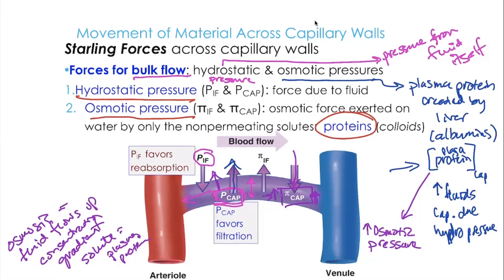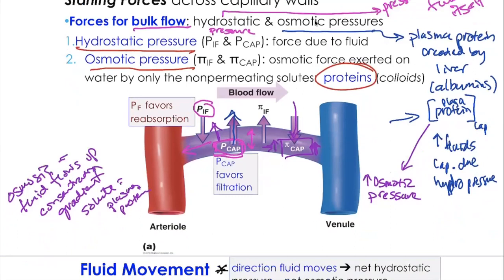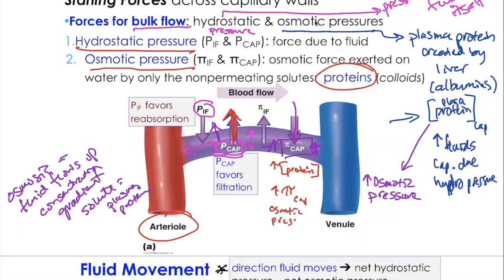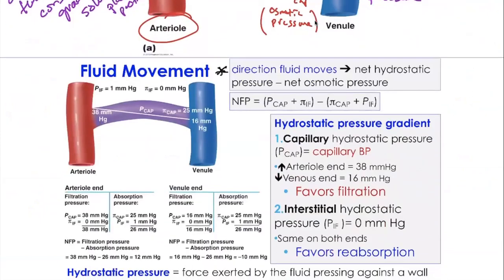At the arterial end, hydrostatic pressure is the greatest force, pushing fluid and small materials out of the capillary. Plasma proteins stay inside the blood because that's what they do — they stay in the plasma. As fluid leaves, the concentration of plasma proteins rises at the venous end, creating higher osmotic pressure, shown here as pi.